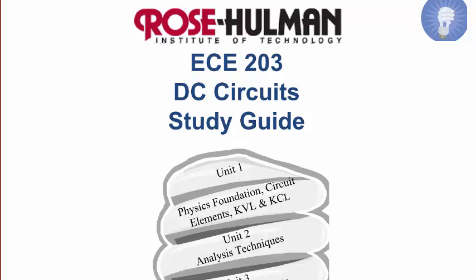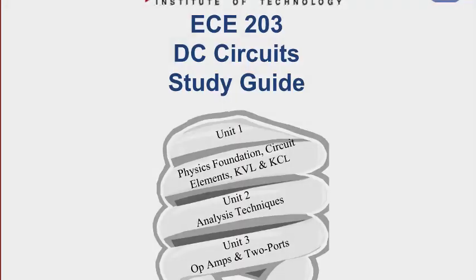This is a 10-week course with three units. The first unit is a review of some things you learned in physics, so it's a physics foundation, circuit elements, KVL and KCL. Unit 2 is analysis techniques such as mesh current method, node voltage method, Thevenin and Norton equivalents. And the third unit is operational amplifiers and two ports.